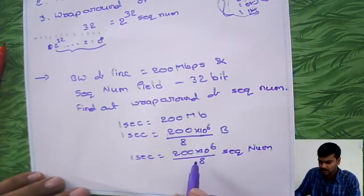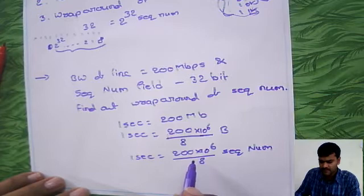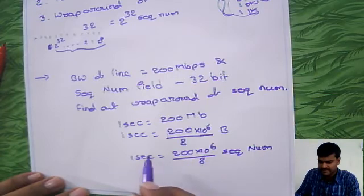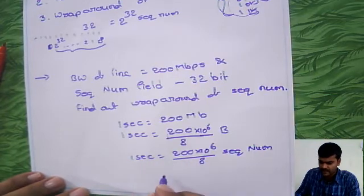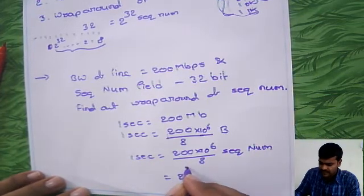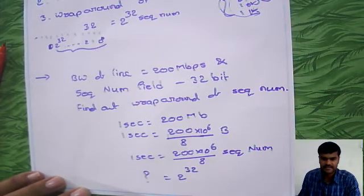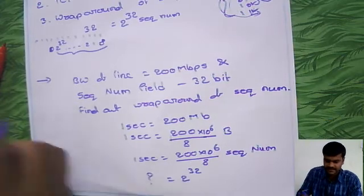To generate this many sequence numbers it is taking one second, to generate 2 rise to 32 sequence numbers how much time it will take? This is just a rule of three.